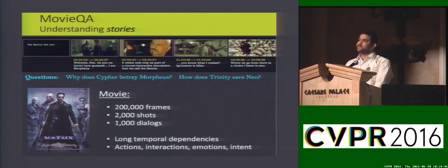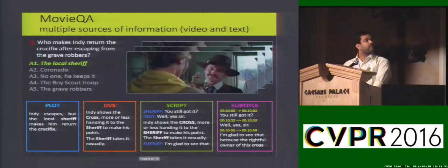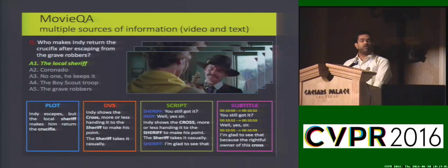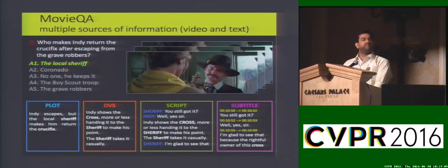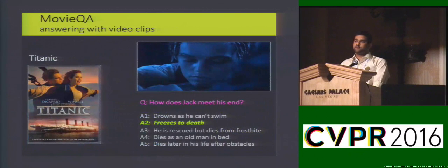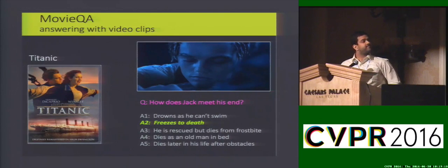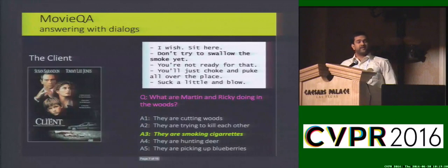Our MovieQA dataset aims to inspire work in this domain by providing quizzes about stories of movies. The dataset comes with multiple answering sources — one can use videos and dialogues the way we watch movies, or also use scripts available to producers prior to filming. We also provide plot synopses that people write after watching the film. An example of a visually answerable question is shown here in the movie Titanic, asking how Jack dies, and we can also infer actions from dialogues between characters — here when they are referring to smoking.